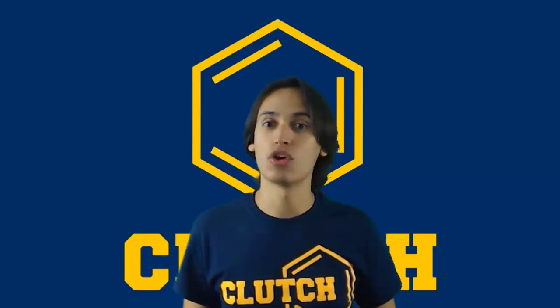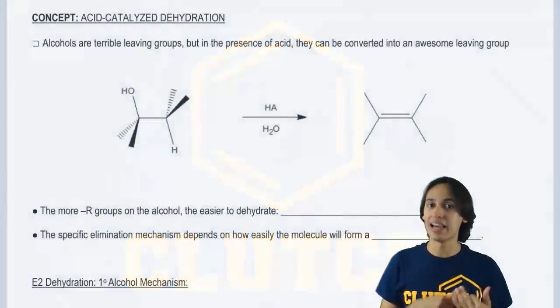Now we're going to talk about a way that we can make double bonds out of alcohols. This is through a mechanism called acid-catalyzed dehydration.